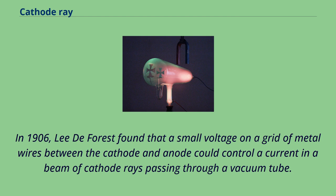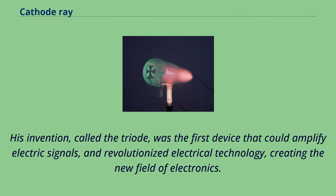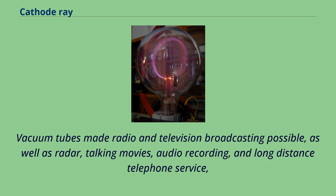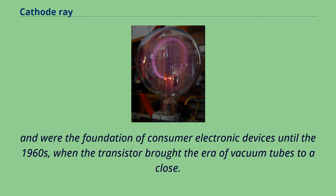In 1906, Lee de Forrest found that a small voltage on a grid of metal wires between the cathode and anode could control a current in a beam of cathode rays passing through a vacuum tube. His invention, called the triode, was the first device that could amplify electric signals, and revolutionized electrical technology, creating the new field of electronics. Vacuum tubes made radio and television broadcasting possible, as well as radar, talking movies, audio recording, and long-distance telephone service, and were the foundation of consumer electronic devices until the 1960s, when the transistor brought the era of vacuum tubes to a close.